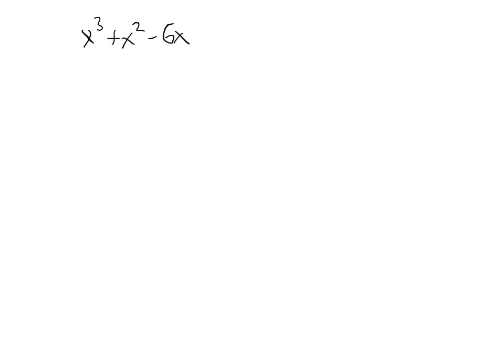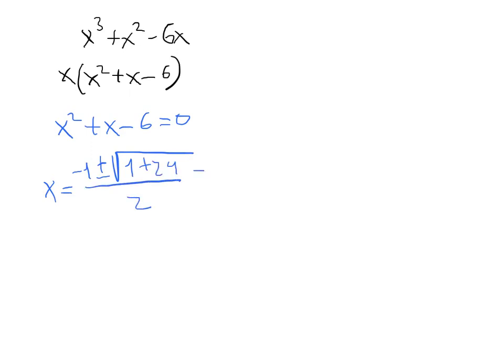What happens if you happen to have no independent term? Well, this is extremely easy. All you do is you can factorize x. And in this case x equals 0 will be a root of this polynomial. Now I can just factorize the rest by solving the quadratic. So I get that x is equal to minus 1 plus or minus 1 plus 24 divided by 2.